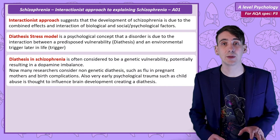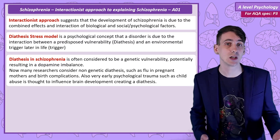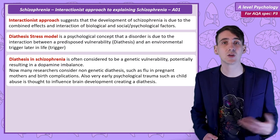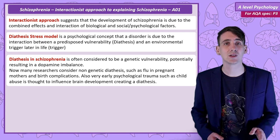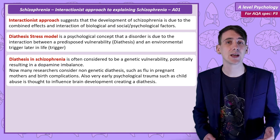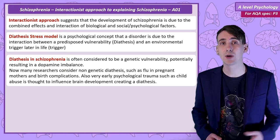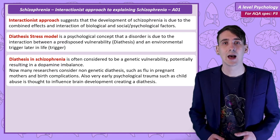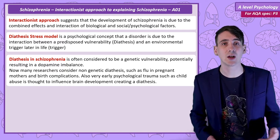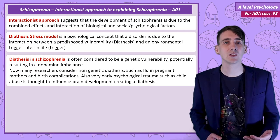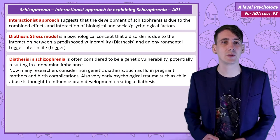This vulnerability was originally thought to only be a combination of genes, potentially genes that influence the dopamine system. But now psychologists consider other potential physical diatheses, such as pregnant mothers having the flu late in pregnancy, and very early psychological trauma such as child abuse. Both of these factors may affect early brain development, creating a vulnerability.